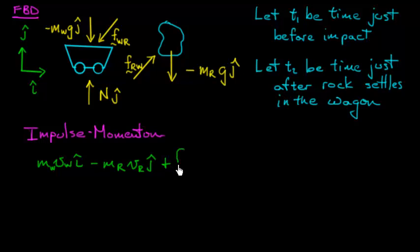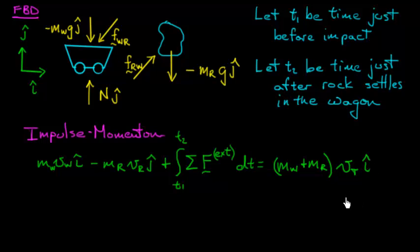Then I add to that an integral, the impulse from time one to time two. You add up all your external forces, integrate them with respect to time. This equals your momentum of your system at time two. After things are settled down, both the wagon and rock are moving together, so I've got (m wagon plus m rock) VT in the i hat direction.